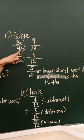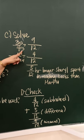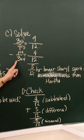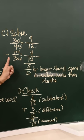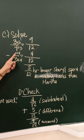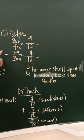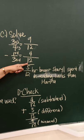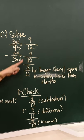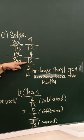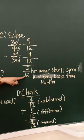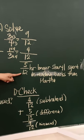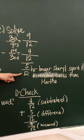The LCD of three and four is twelve. So, what do you multiply by four to get twelve? Three. Four times three, twelve. Three times three, nine. This one, multiply three to get twelve is four. So, three times four is twelve. One times four is four. Since they are now similar, you can now subtract. Nine minus four is five. Then just copy their common denominator, which is twelve. And this is in lowest term because the GCF of five and twelve is one.